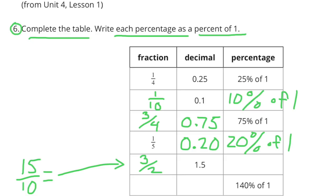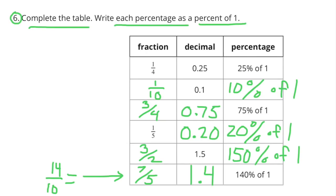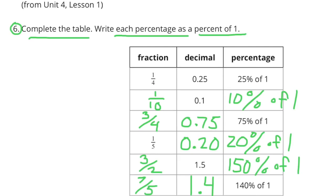One-and-five-tenths can be written as fifteen-tenths or three-halves, which is 150% of 1. 140% of 1 could be written as 140 over 100 or fourteen-tenths, which is equal to seven-fifths. And when written as a decimal, it's one-and-four-tenths. Take a moment to compare your table with my table.